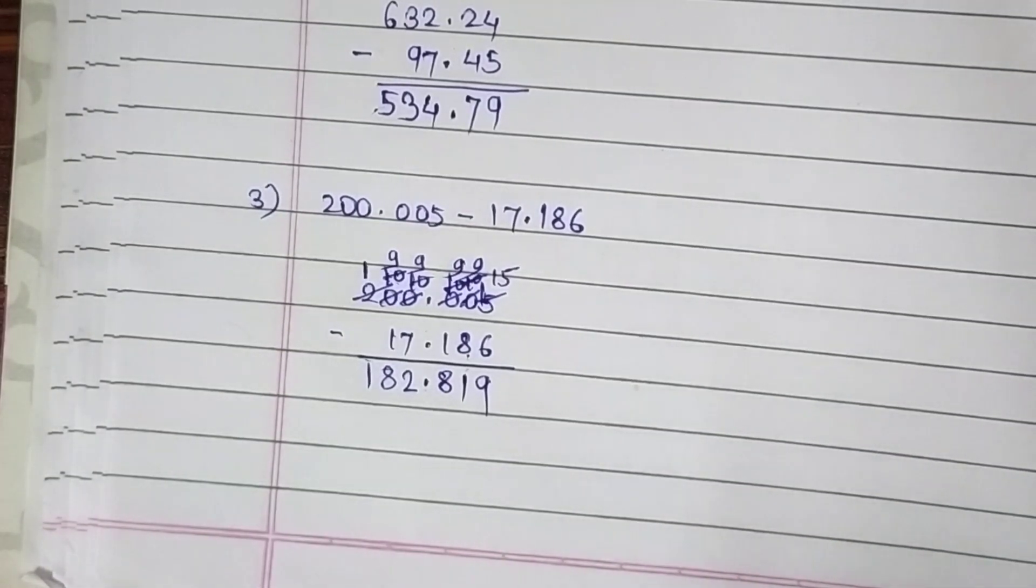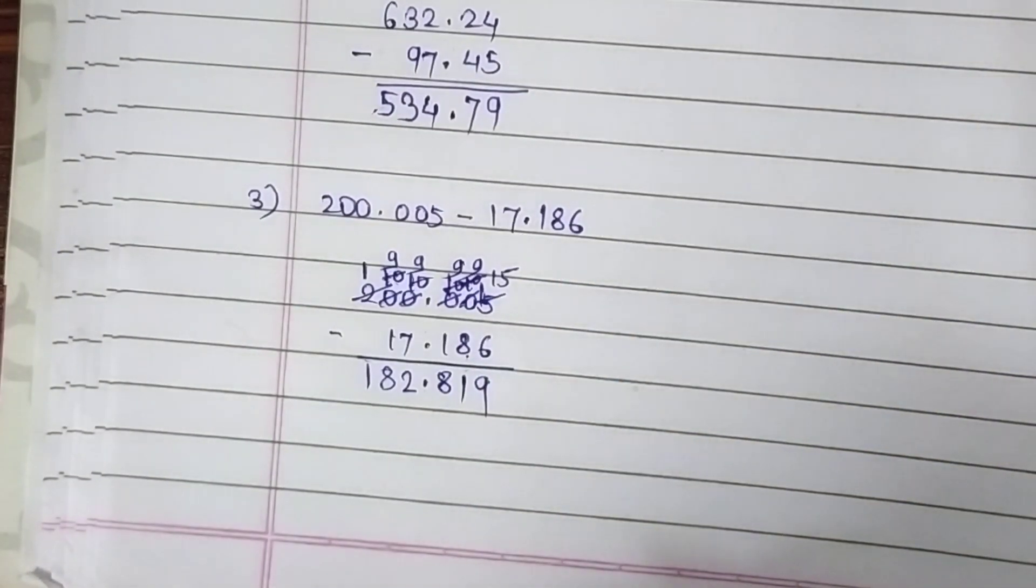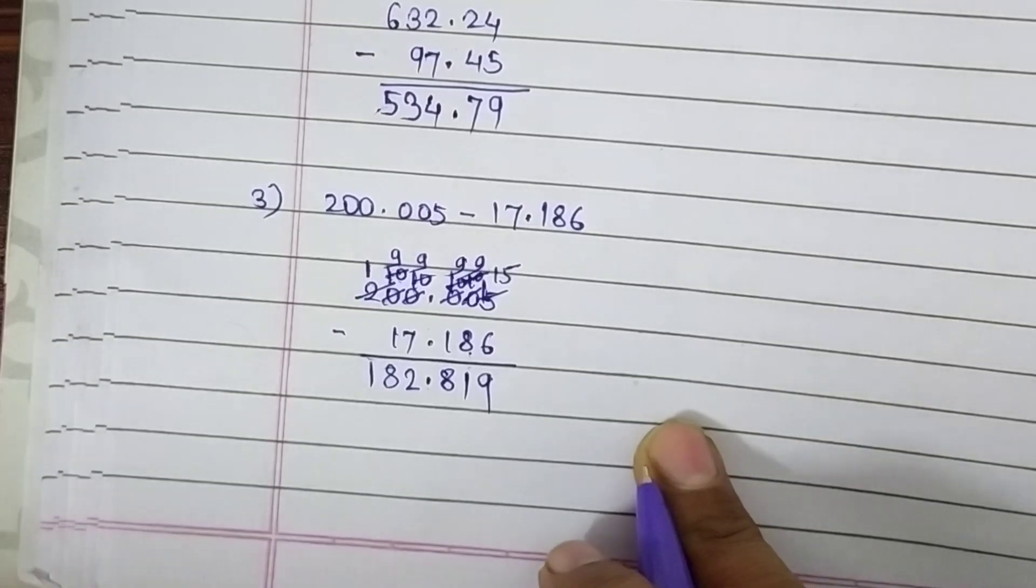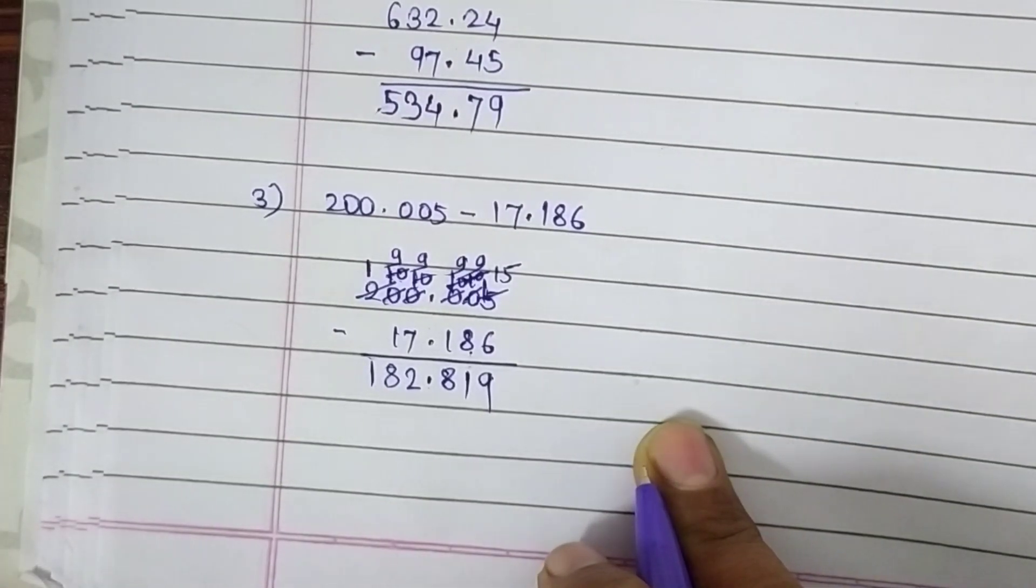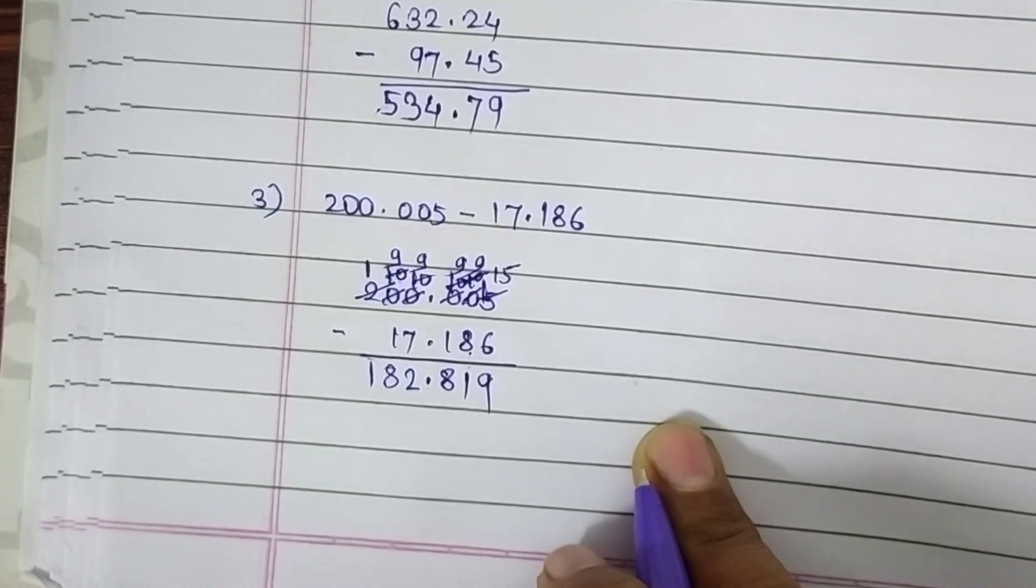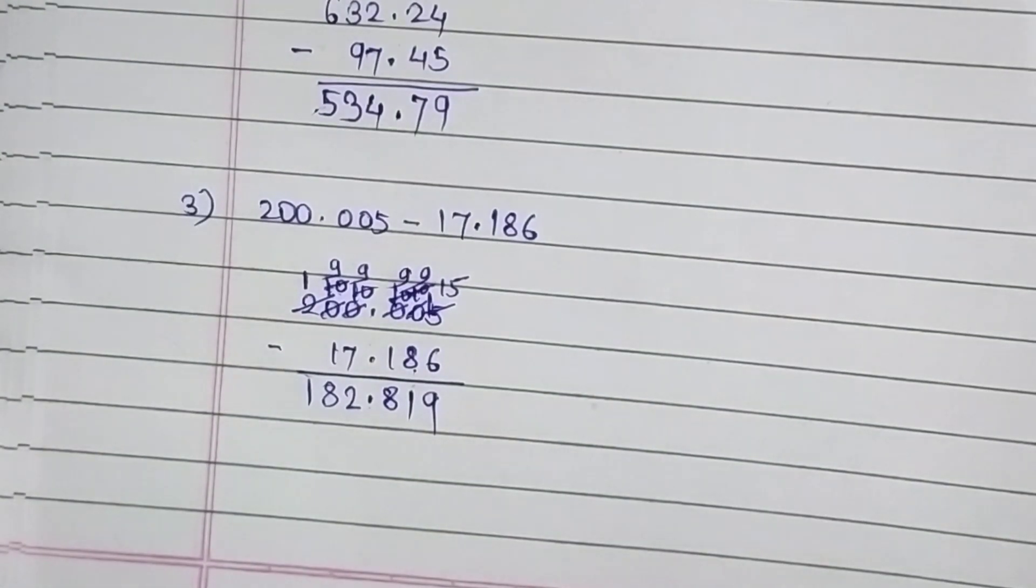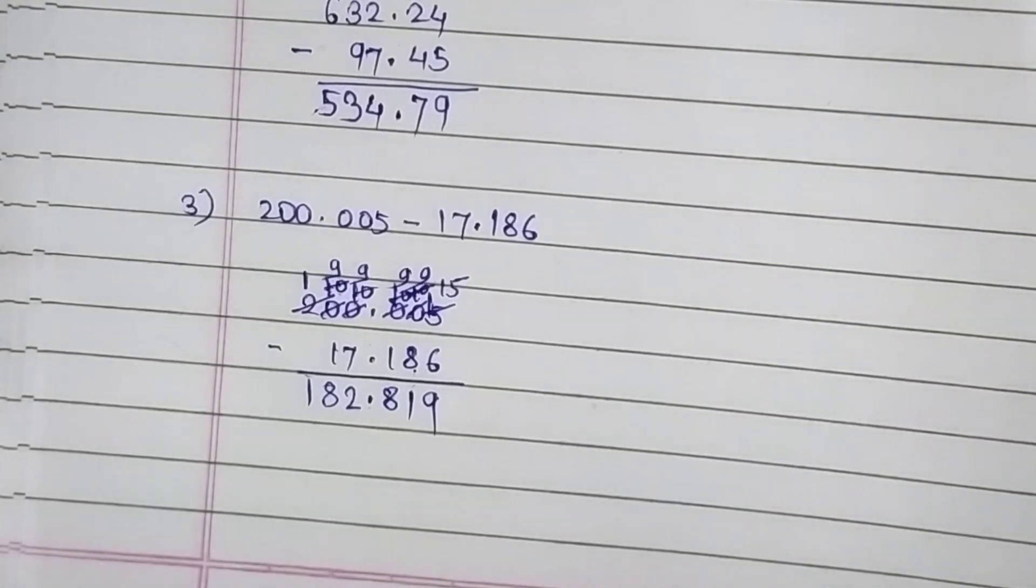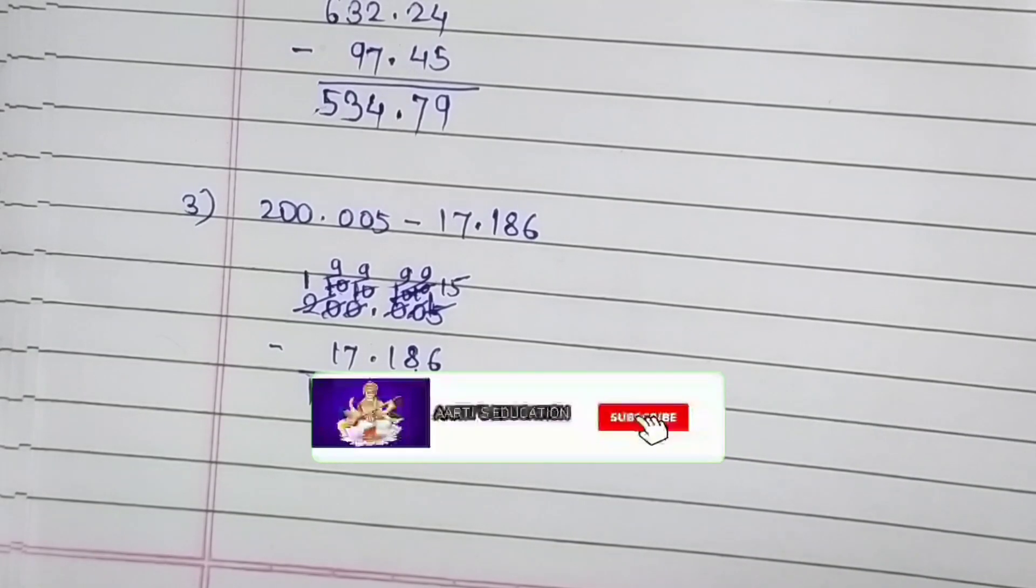We learnt it in 5th standard also, so just practice it very well. You have to write the given number in proper places while arranging it in vertical order for addition or subtraction. You have to place their digits in proper places. Hope you will understand. Practice it very well and don't forget to subscribe my channel. If you want to look at more videos, press on the i button. Thank you.